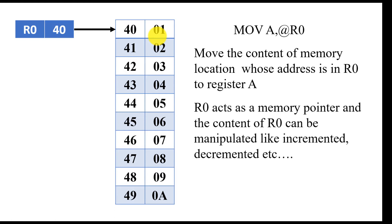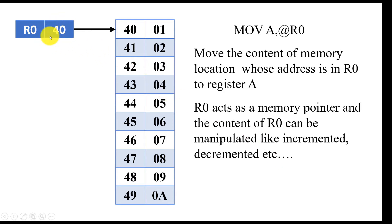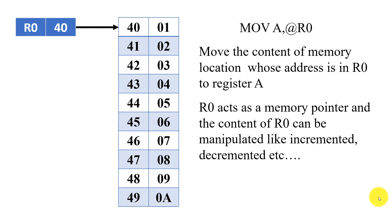The second important point is that R0 acts as a memory pointer. You can see that this address acts as a memory pointer and it can be manipulated — incremented, decremented, or you can do some other arithmetic on it. So you can change the value of this particular register and hence change the value of this pointer. For example, if you increment the value of R0 by 1, you get a pointer which will point to the next memory location.